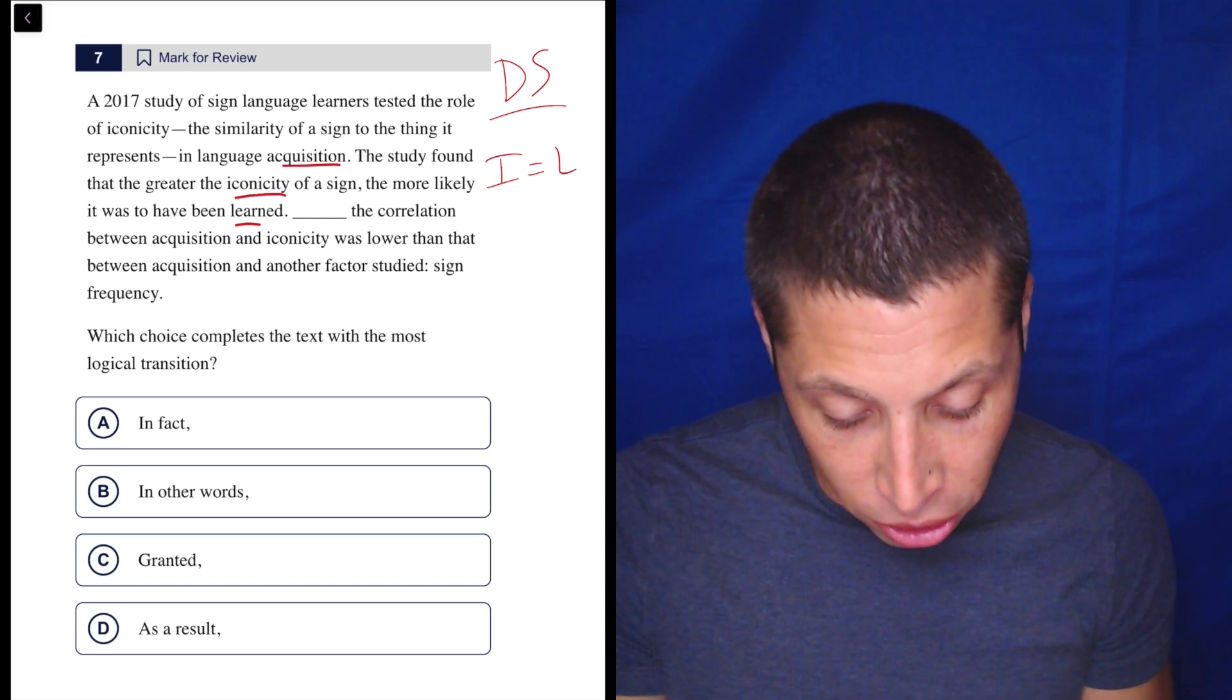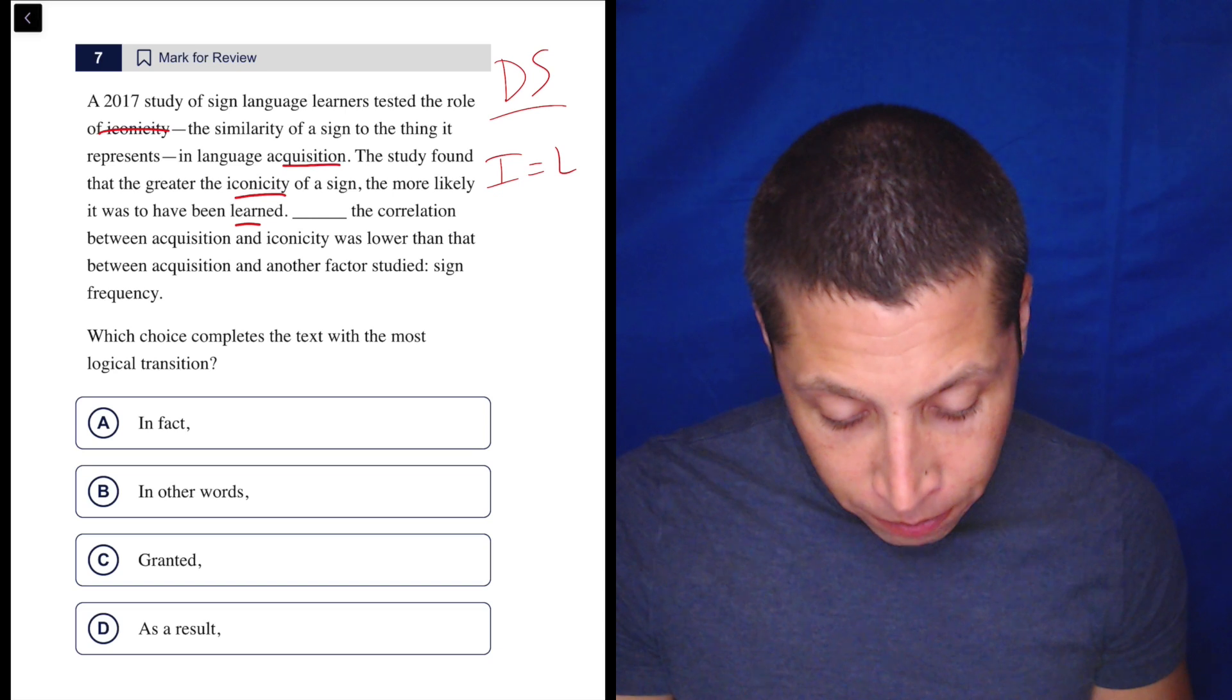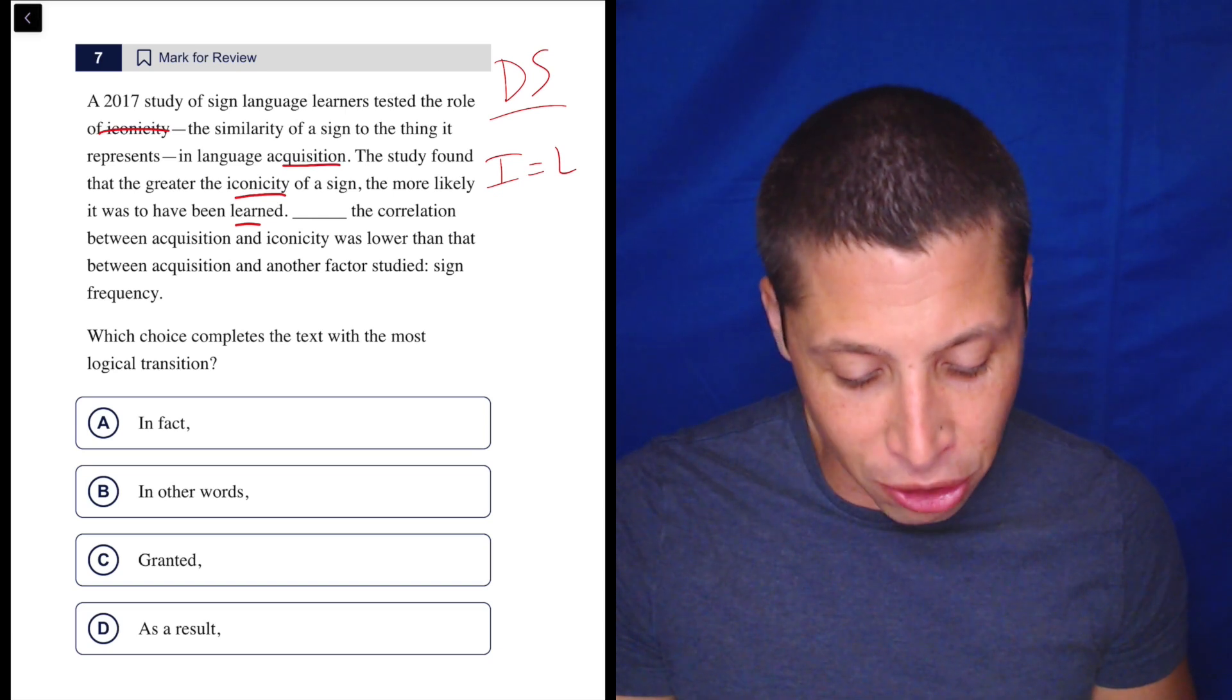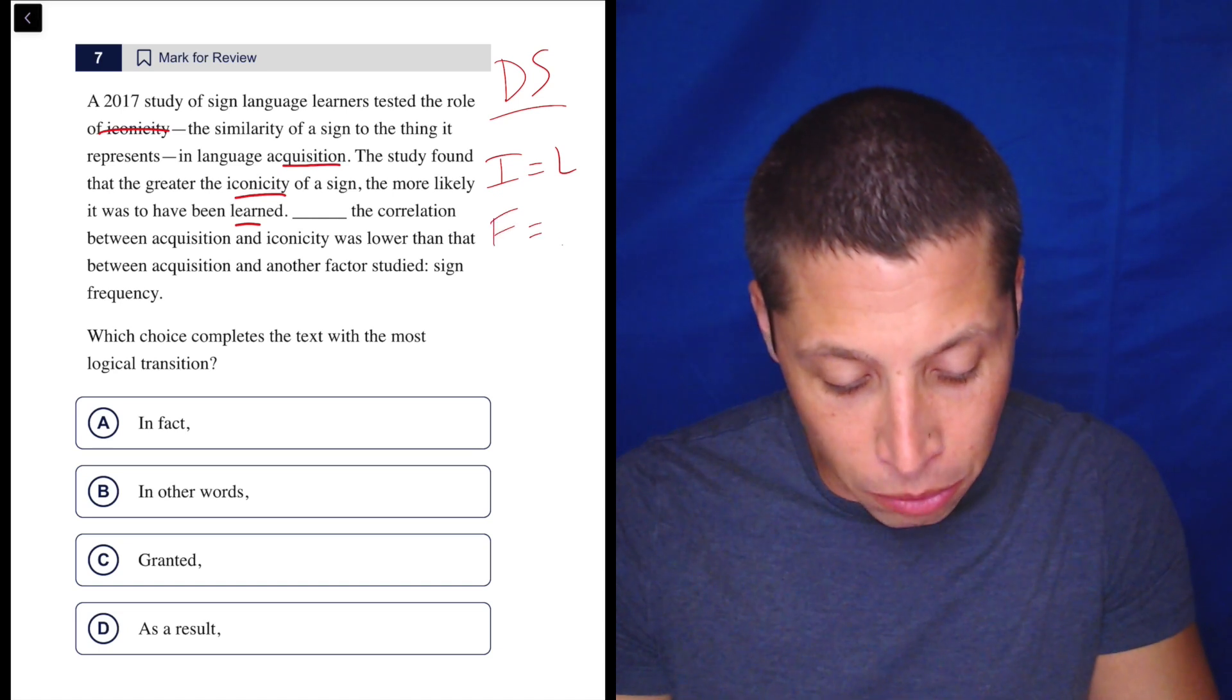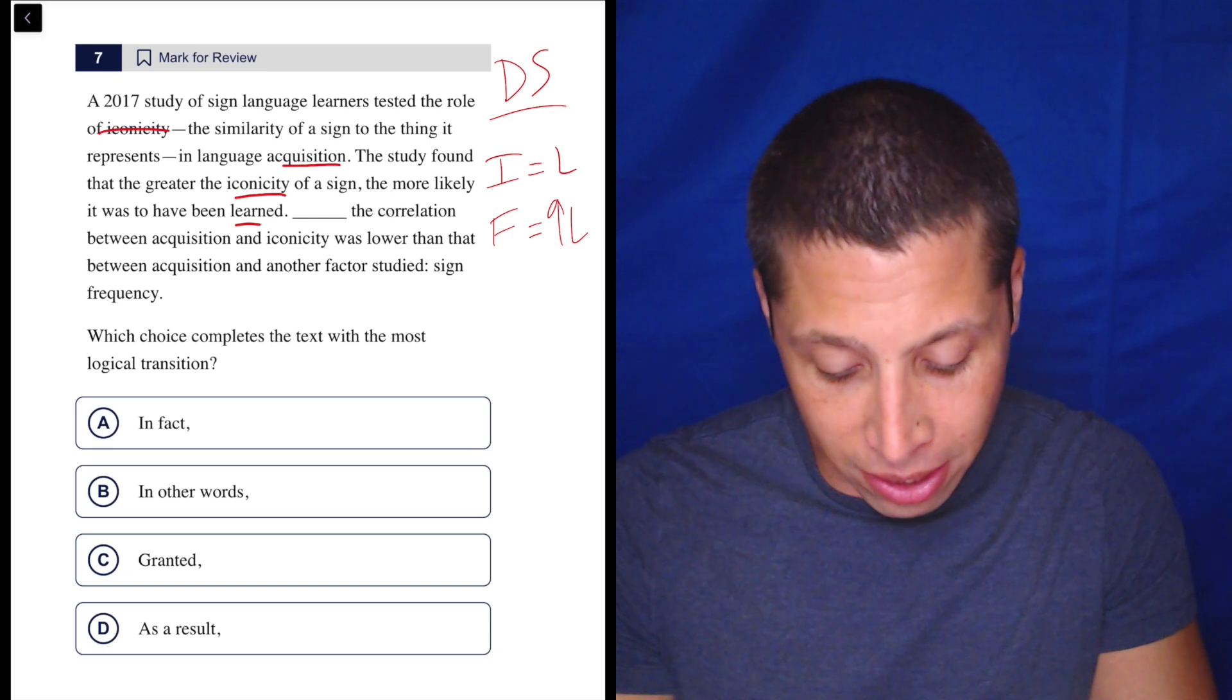So what is acquisition? Remember, acquisition is iconicity. I guess they're the same thing. The correlation between acquisition and iconicity was lower than that between acquisition and other factors. So the frequency equals more learning. They're kind of setting up a contrast here, it seems.